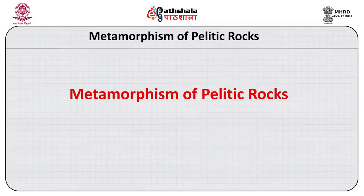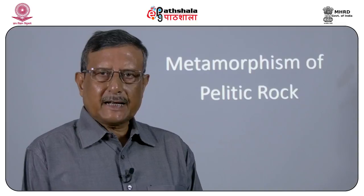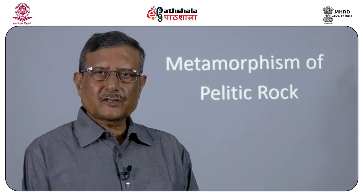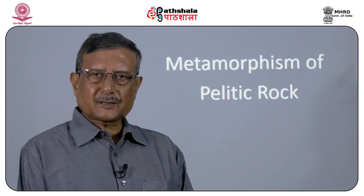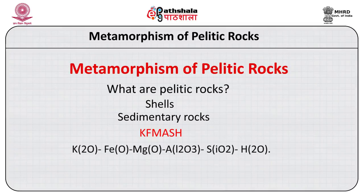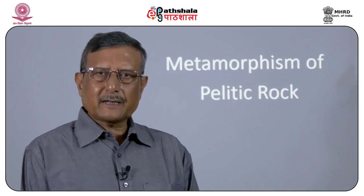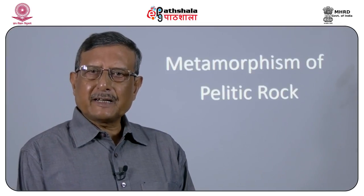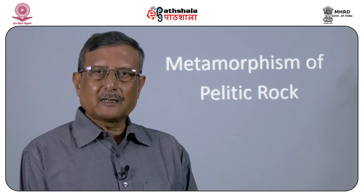Now coming to the pelitic rocks proper. What are pelitic rocks? Pelitic rocks were originally shale or siltstone type sedimentary rocks, and they contain minerals like quartz, feldspar, a lot of white mica, and a lot of clay minerals. Chemically, the composition can be expressed in the system KFMASH: K₂O, FeO, MgO, Al₂O₃, SiO₂, H₂O. Within this system, pelitic rocks vary widely in composition, but all are characterized by very high Al₂O₃, SiO₂, and K₂O, variable FeO and MgO, but invariably low CaO.